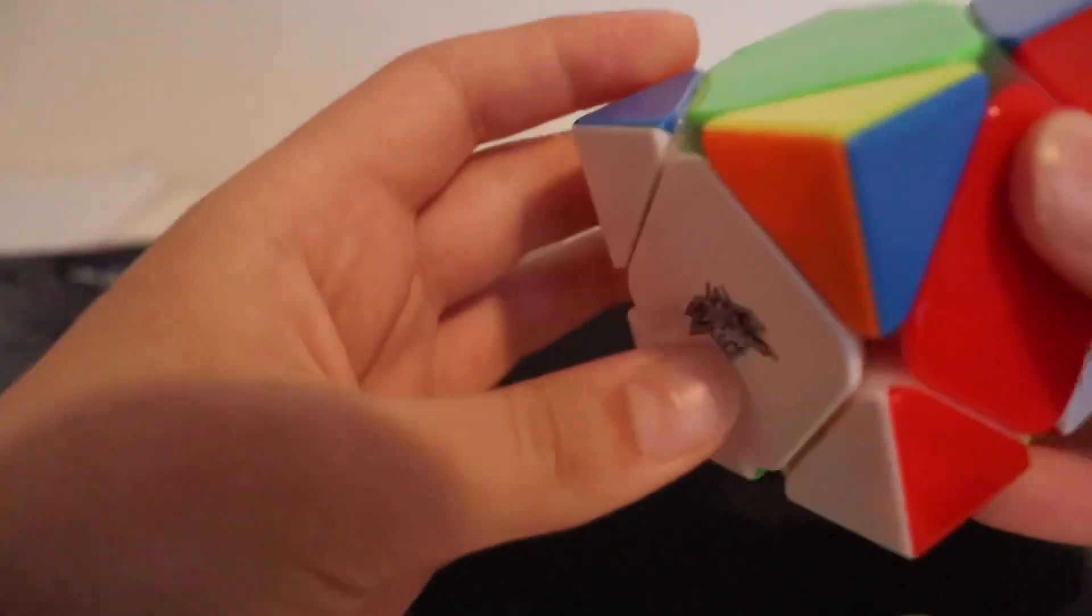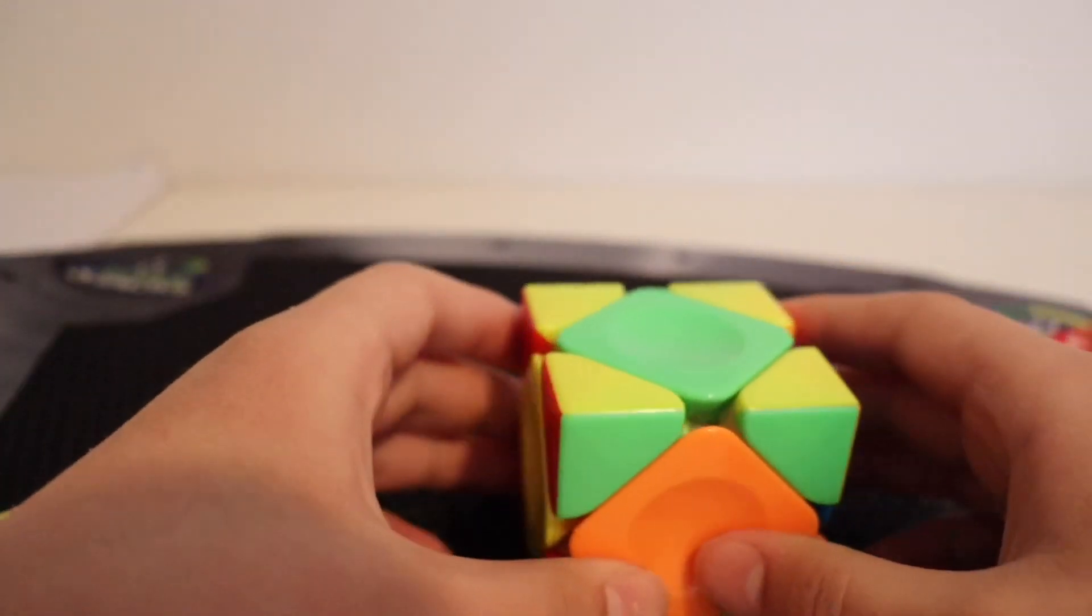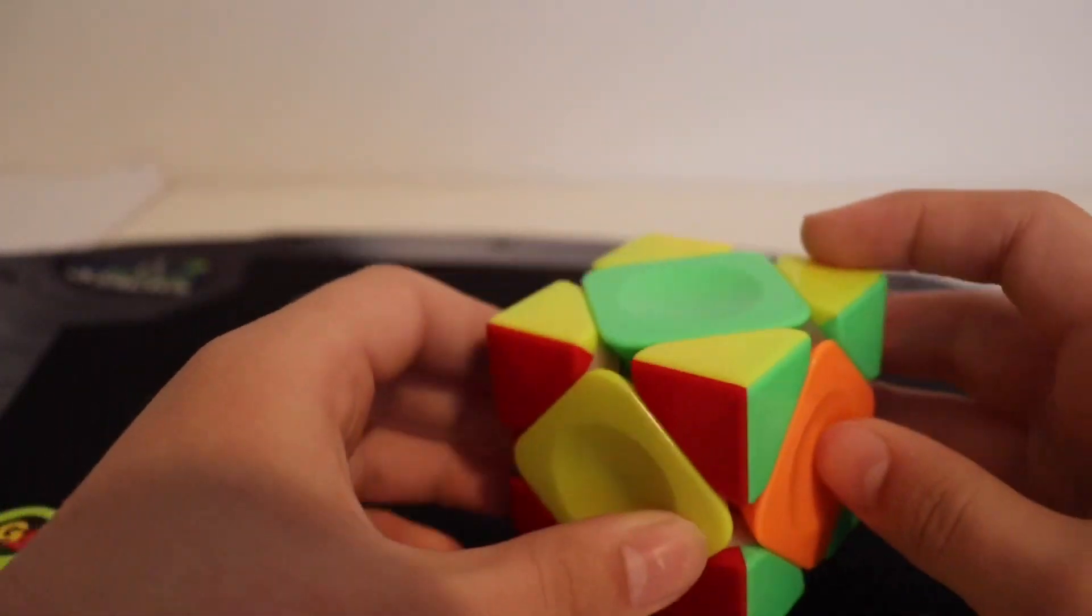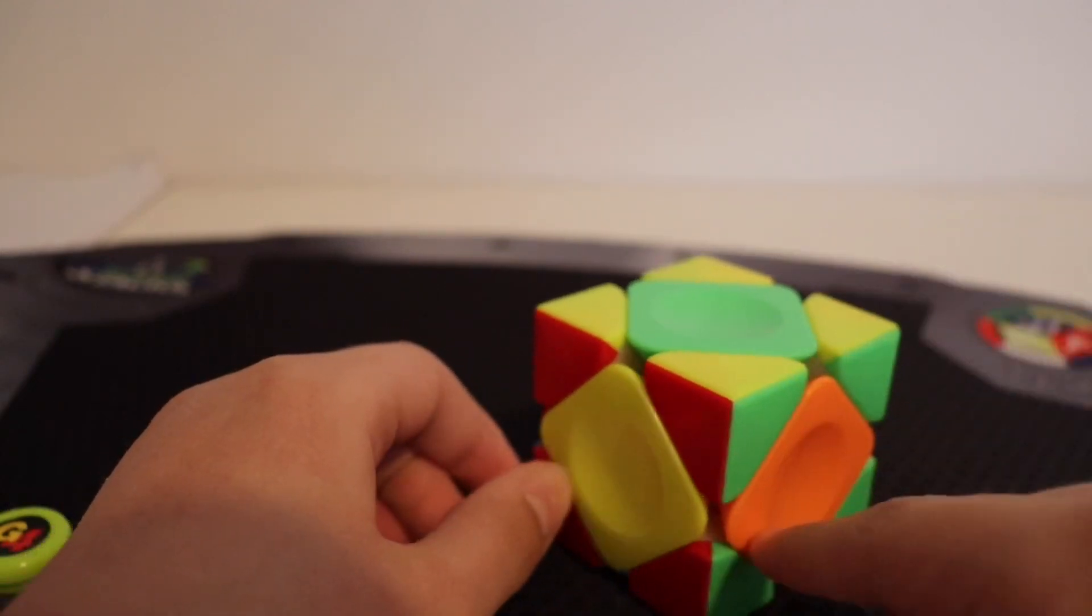So, it's a really nice alg. The next one is the worst one, and this is when, if you hold it in that same orientation, the U-center is going to the right.